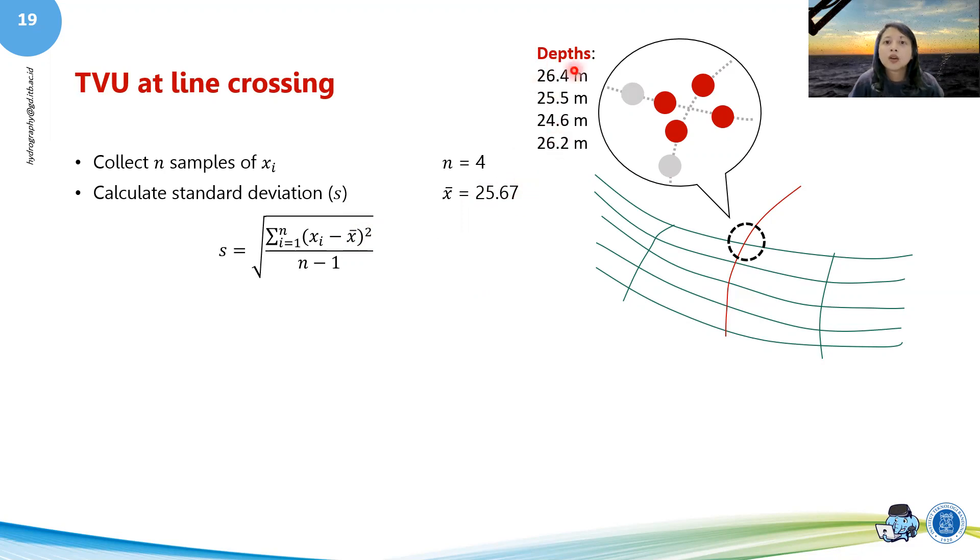Firstly, you want to see what your x̄ is. X̄ is basically your average data or the mean of your data. So this is the average of the depth. For example, this one is 26.4 minus this, and then you square it, and then you do it each of them. Then you sum it all, then you divide it by n minus one or four minus one.